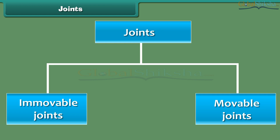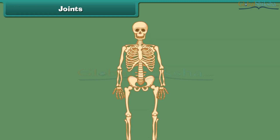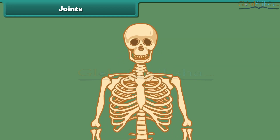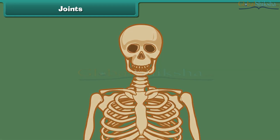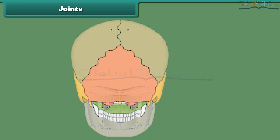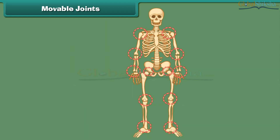Let us first discuss what immovable joints are. Immovable joints are the joints where no movement of the bones is possible. The joints of the bones of the skull are immovable joints. Most movable joints allow free movement of the body parts, whereas in some joints only a little movement is possible.